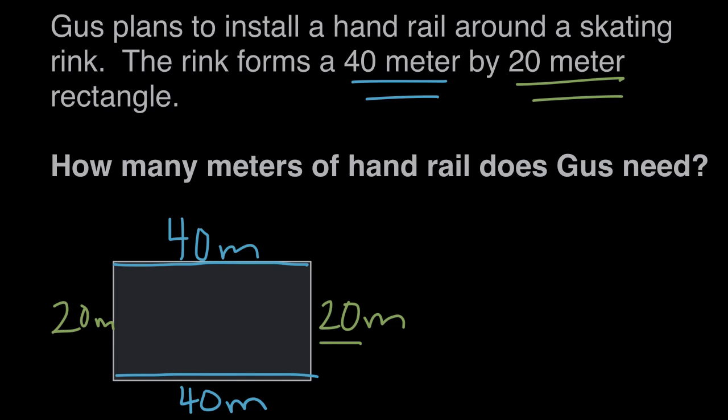So now we can figure out the entire amount of handrail Gus needs, the amount of meters he needs to buy to put around the skating rink.